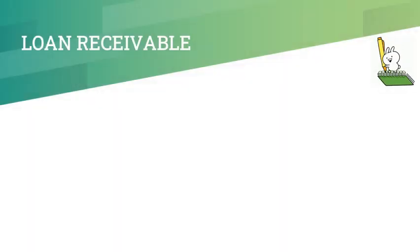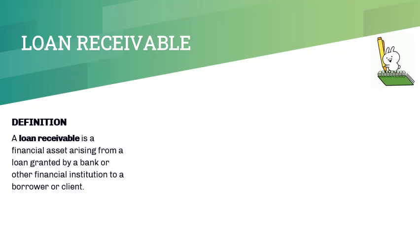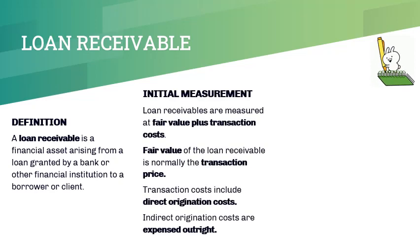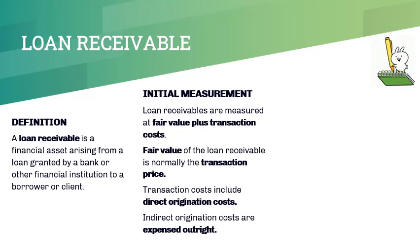A loan receivable arises from a loan granted by a bank or other financial institution to a borrower or client. A loan receivable is initially measured at fair value plus transaction costs. Fair value is normally the transaction price, whereas transaction costs pertain to direct origination costs. Take note that indirect origination costs are expensed outright.